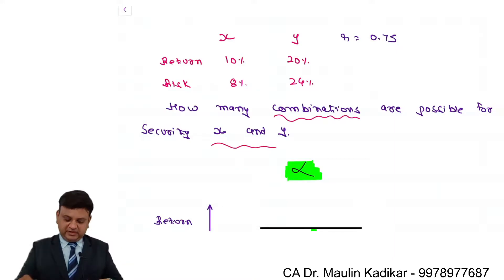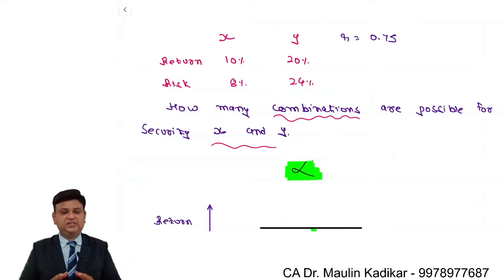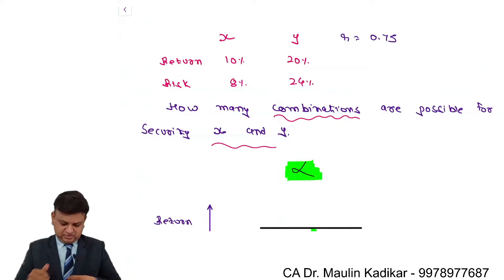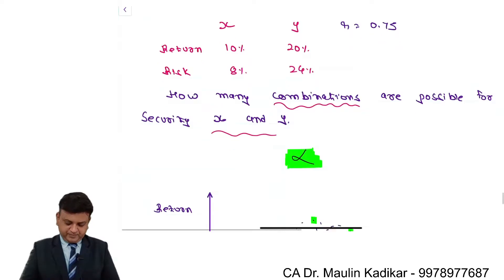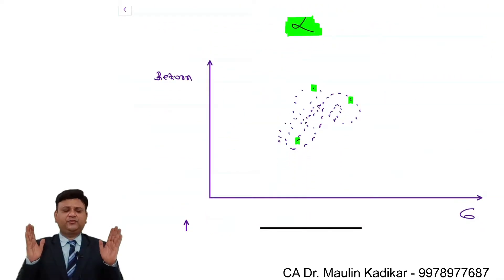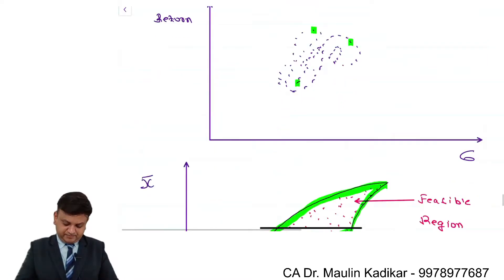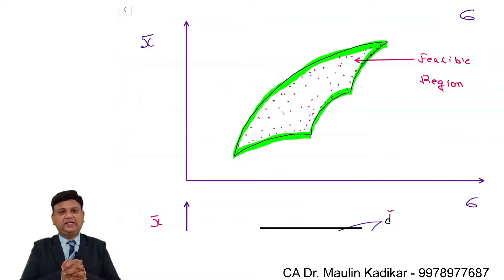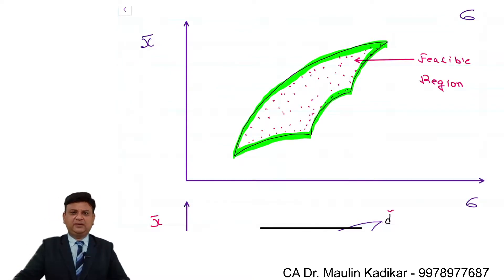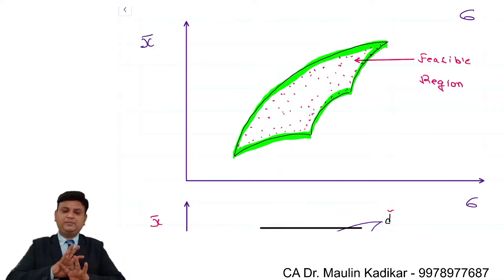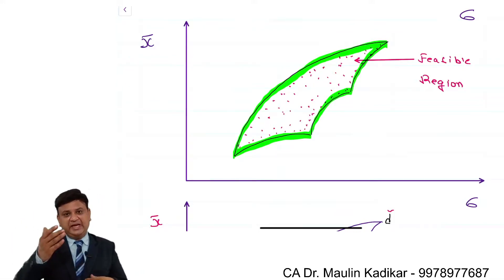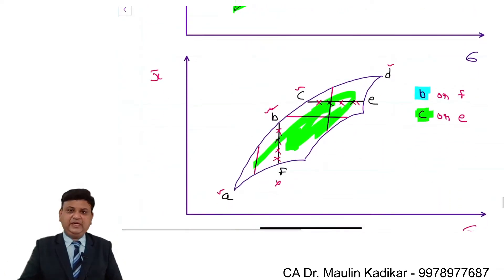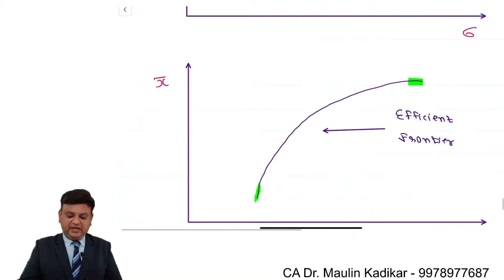So a small summary of the working done so far: there are two securities with return, risk, and correlation coefficient given. First, there are infinite combinations possible for two securities. If we plot all of them on a diagram, we will have a broken-egg-shape diagram for the feasible region. From all these portfolios we can eliminate the inefficient ones and end up with the efficient portfolios lying on the efficient frontier.